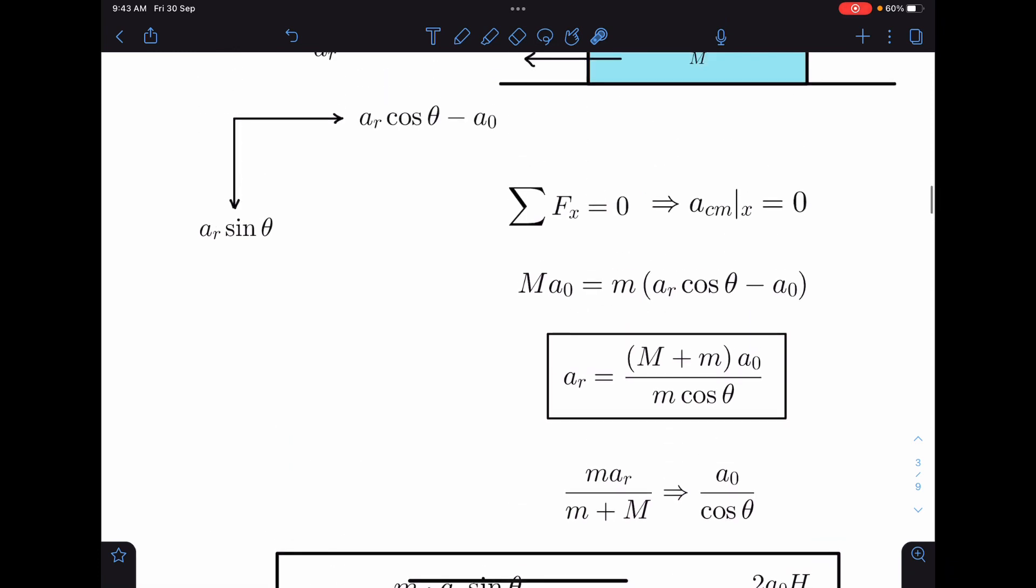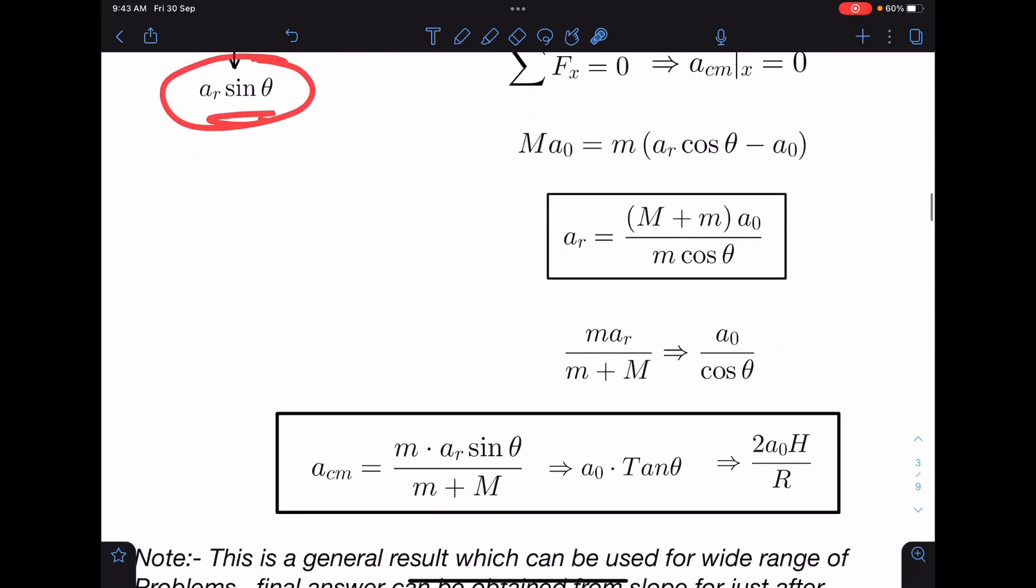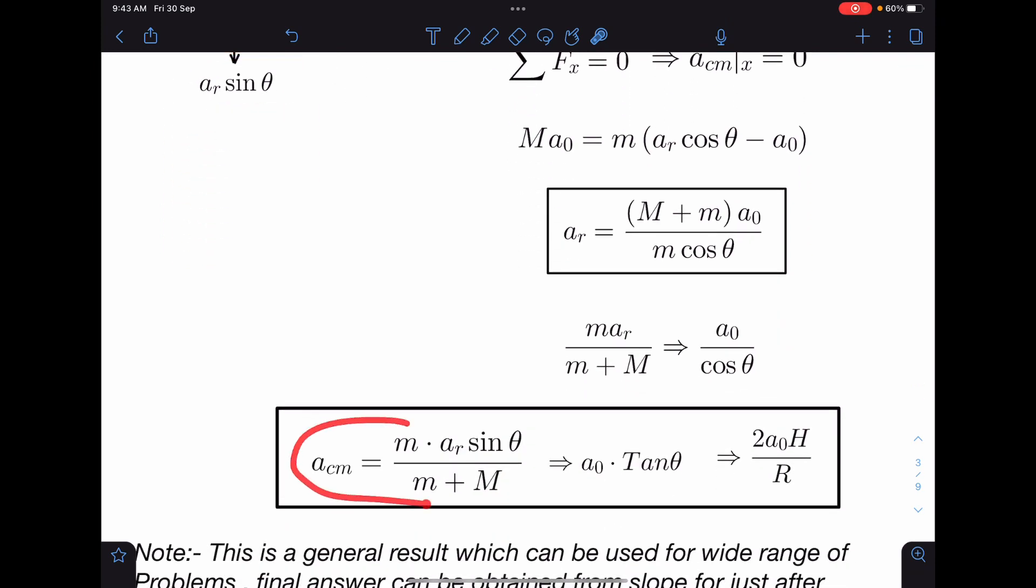From here, whatever acceleration is there, it is only in y direction. So mass of particle times aᵣsin θ divided by total mass, this will be the center of mass acceleration which is in y direction, luckily in this case.